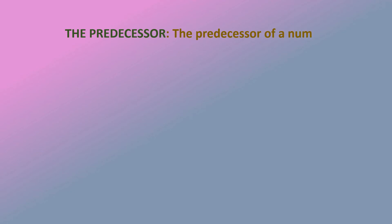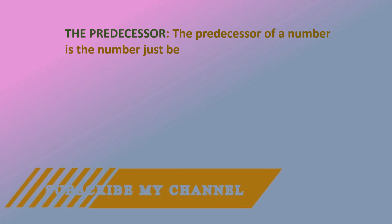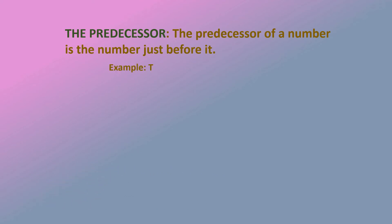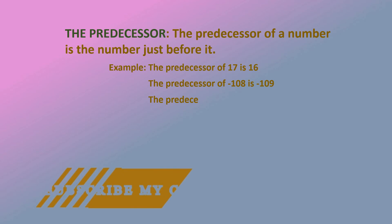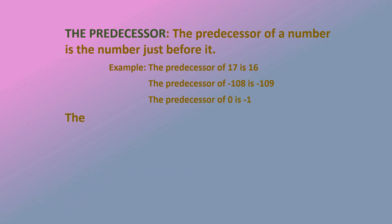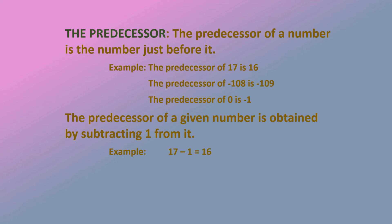Now we are going to learn about predecessors. The predecessor of a number is the number just before it. For example, the predecessor of 17 is 16, the predecessor of –108 is –109. The predecessor of a given number is obtained by subtracting 1 from it. For example, 17 – 1 = 16, –108 – 1 = –109, and 0 – 1 = –1.